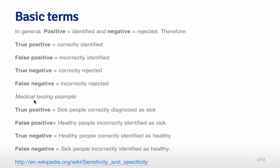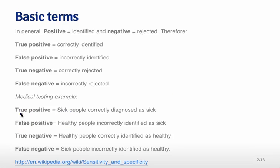To make this more concrete, consider a medical testing example. We're trying to identify people that are sick using a screening test — a very common example would be mammograms to identify if women have breast cancer. The true part refers to whether you're actually sick or not. If we truly identified you, then you were truly sick; if we falsely identified you, then you were actually healthy. A true positive is somebody who is truly sick and we correctly diagnosed them as being sick.